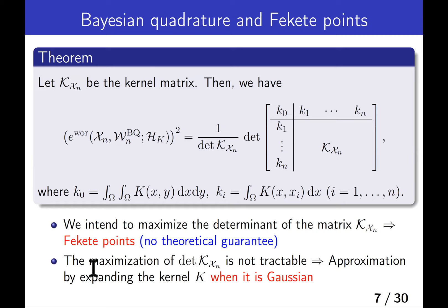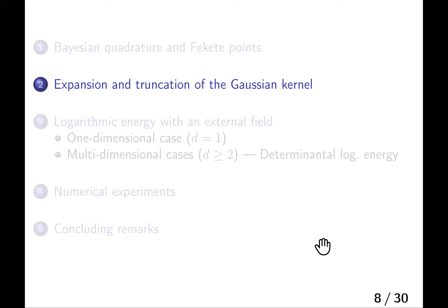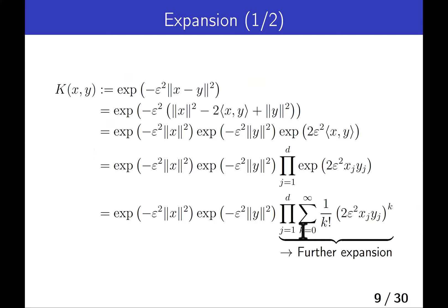As is well known, the maximization of this determinant is not tractable. Therefore, we approximate this determinant by expanding the kernel when it is Gaussian. To this end, we consider the expansion and truncation of the Gaussian kernel. First, we expand the squared norm in the Gaussian kernel to obtain the expression in the third line. Then the exponential of the cluster is given by the product of the exponentials of all the components, and each exponential is expressed by the Taylor expansion. We can then provide a further expansion of this expression.